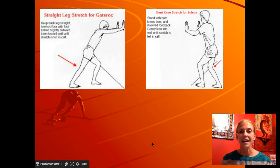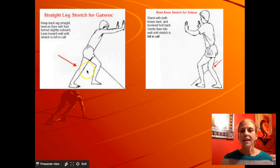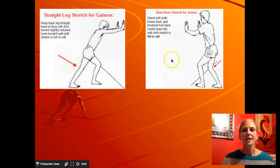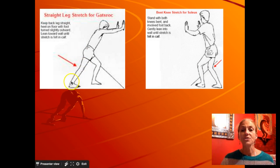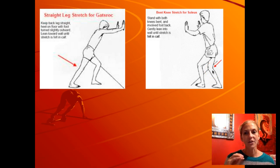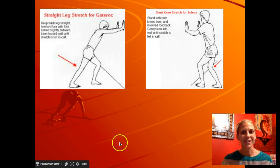That covers the muscles of the legs — there are others, but those are the ones we're naming. One thought to leave you with: have you been doing your calf stretches correctly? If your leg is straight while pushing against a wall, you're stretching your gastrocnemius — the superficial muscle. If your knee is bent, you're stretching your soleus — the deeper muscle. If your toe is up on a curb, that's similar to the straight-leg stretch. Hope you enjoyed it — talk to you later!